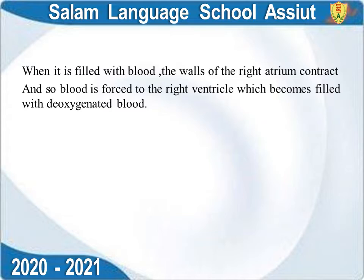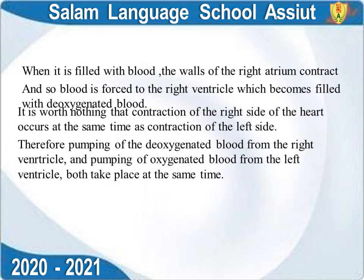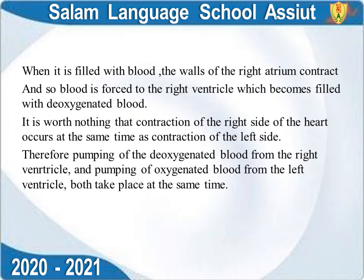The inferior vena cava pours blood into the right atrium. When the right atrium fills with blood, its walls contract forcing blood into the right ventricle. Contraction of the right ventricle and left ventricle occur at the same time, pumping deoxygenated blood from the right ventricle and oxygenated blood from the left ventricle simultaneously.